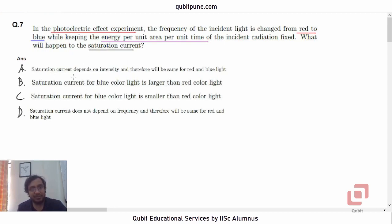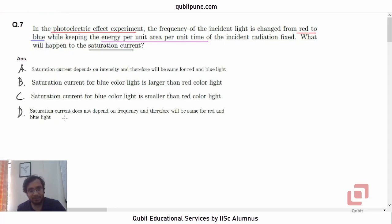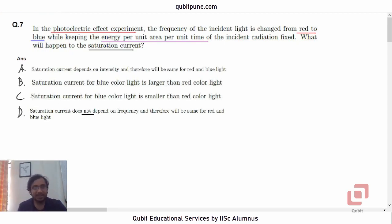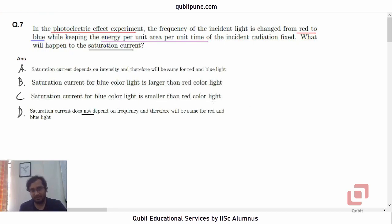Option A says saturation current depends on intensity and therefore will be the same for red and blue light. Option D says saturation current does not depend on frequency and therefore will be the same for red and blue light. Options B and C say saturation current for blue is larger than red, and option C says saturation current for blue is smaller than red color light.